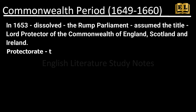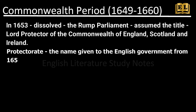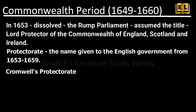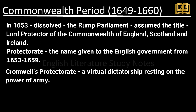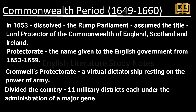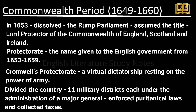In English history, the Protectorate is the name given to the English government from 1653 to 1659. Cromwell's Protectorate was a virtual dictatorship resting on the power of the army. He divided the country into 11 military districts, each under the administration of a major general who enforced the Puritanical laws and collected taxes.